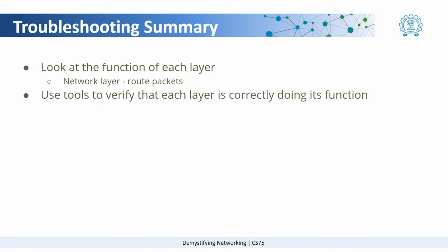The function of the network layer is to route packets to the correct network, on the correct path, etcetera. There are tools available, some of which we saw already — use those tools to verify that each layer is actually performing those functions correctly. Now let us actually do some troubleshooting.